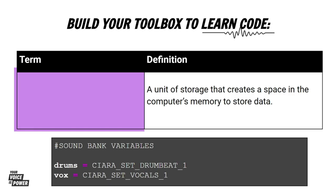So what is a variable? A variable is a unit of storage that creates a space in the computer's memory to store data — it can be changed to represent a value. To use variables, we need to give the variable a name and assign it a value. So we can take our favorite drum sound and assign it to the variable drum. You can then use the variable drum to represent that entire name throughout your code. The variable is defined using the equals sign as an assignment operator.